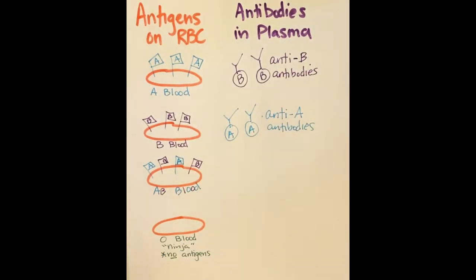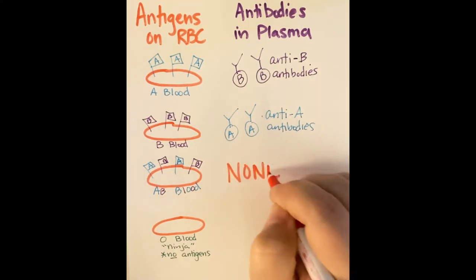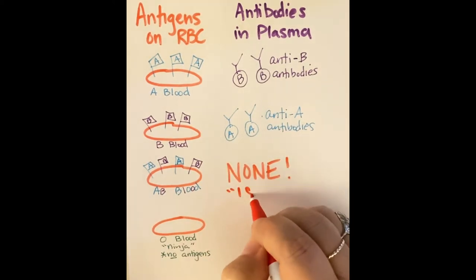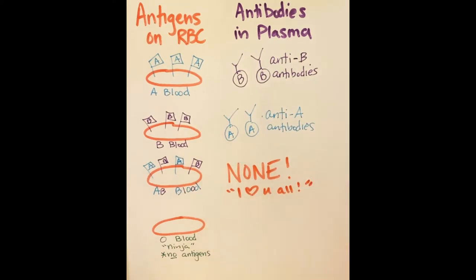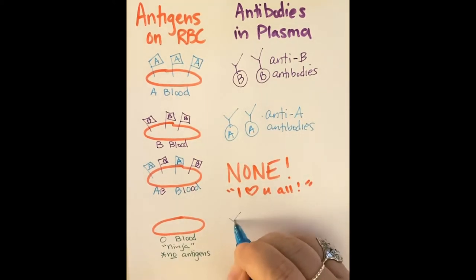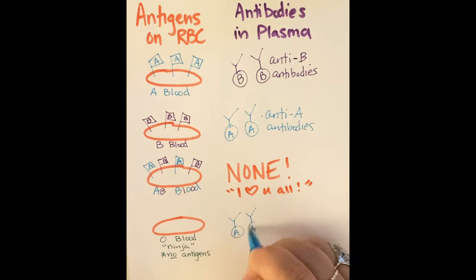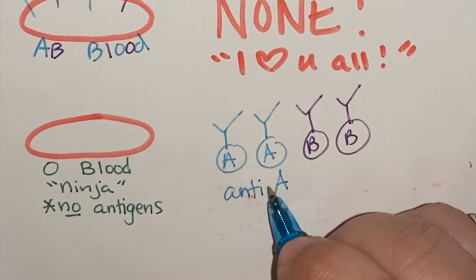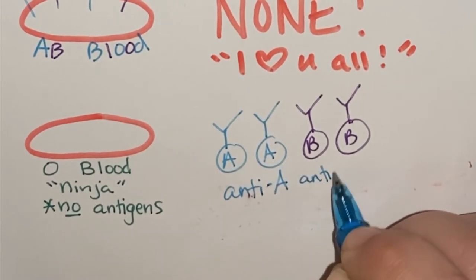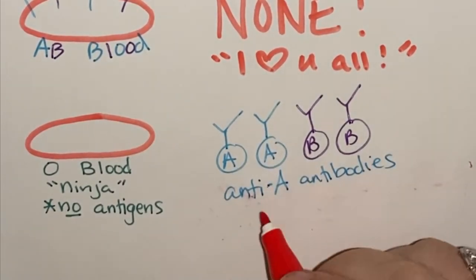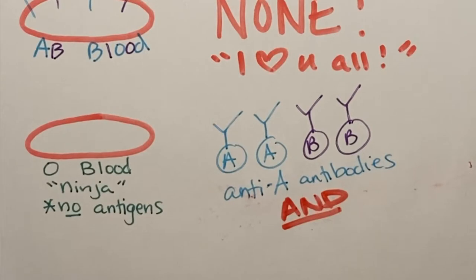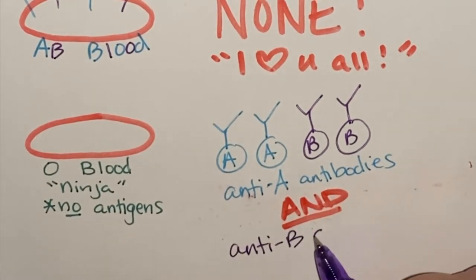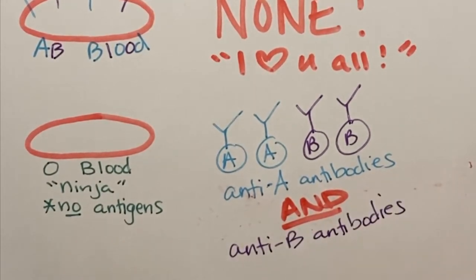If you're AB blood, you don't have any antibodies floating around in your plasma because you have both antigens, so you're not against anything. O blood is the complete opposite because it doesn't have any antigens, so it's against everybody — anti-A and anti-B antibodies floating around in the plasma.